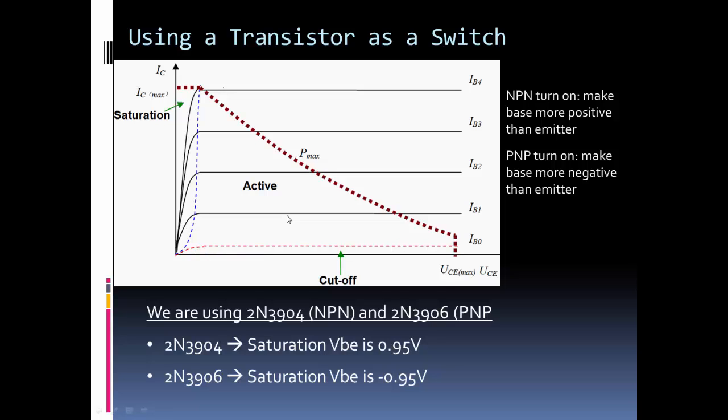Now for us, since we're using it as a switch, we want to use it in the cutoff region, which is to have the transistor act like an open switch, and the saturation region, which has the transistor act like a short or a closed switch. Now note that the transistor's behavior does depend somewhat on the current flow, and you can see the IB stands for base current, which is the current flowing from the base to the emitter, and the IC is the collector current, or the current flowing from the collector down to the emitter.